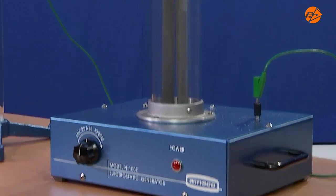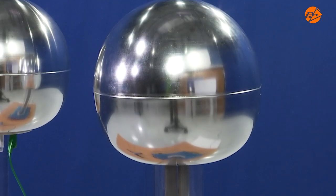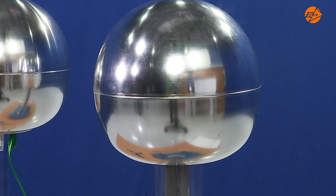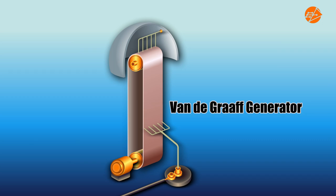This is a Van de Graaff generator. It is used to generate and store charges. Large electrostatic charges can be produced using a Van de Graaff generator.